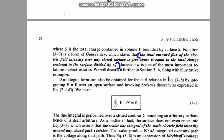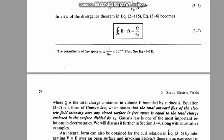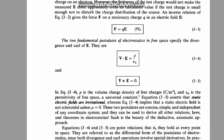The total outward flux of the electric field intensity over any closed surface in free space equals the total charge enclosed in the surface divided by ε₀. You can calculate this using the first equation of the two fundamental postulates of electrostatics in free space.